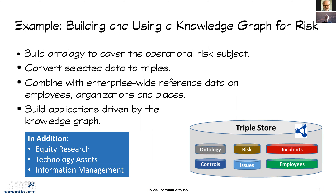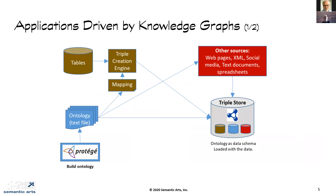Here's the big picture of how this works: applications driven by knowledge graphs. We start, like many of you, building ontologies using Protégé — though you can use any tool you want. Protégé exports a text file; some people use text editors to create ontologies from scratch. Then we take tables — almost always tables, typically from relational databases exporting spreadsheets.